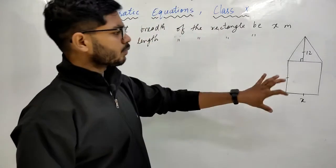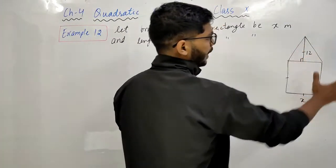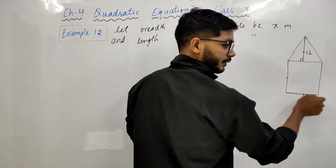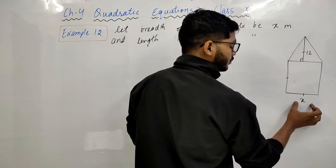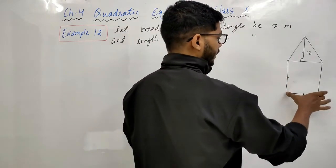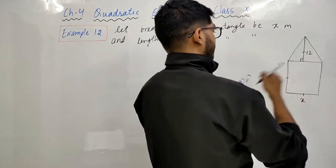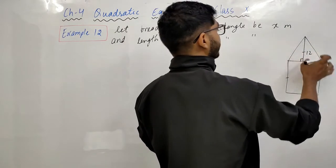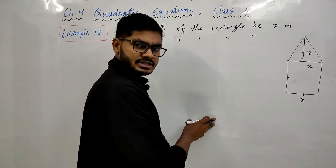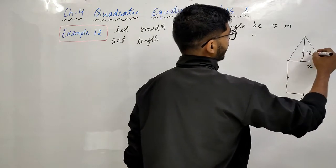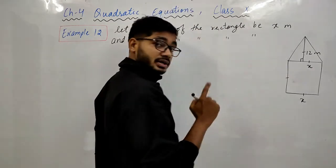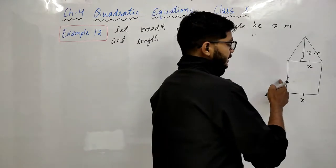देखिए, question में क्या है — एक rectangular park है। मैंने इसकी breadth को x मान लिया है। उसी breadth के ऊपर एक triangular design किया गया है, और उसका altitude दिया हुआ है 12 meter। तो मैंने altitude भी 12 meter मान लिया है।